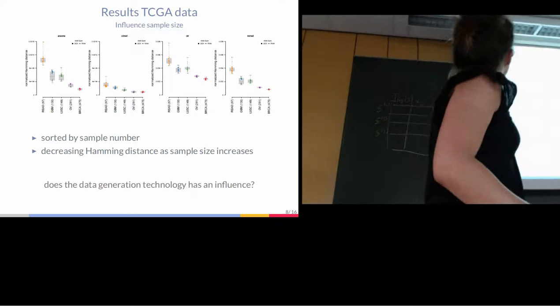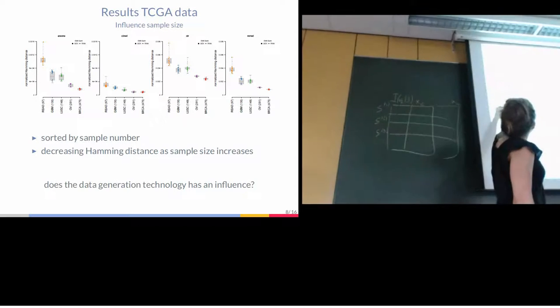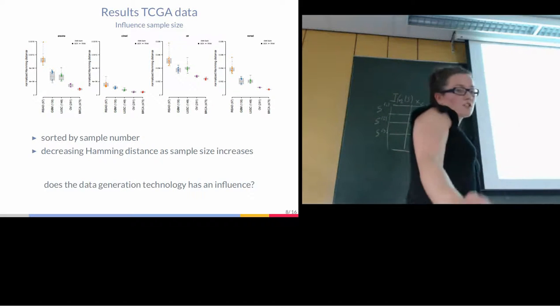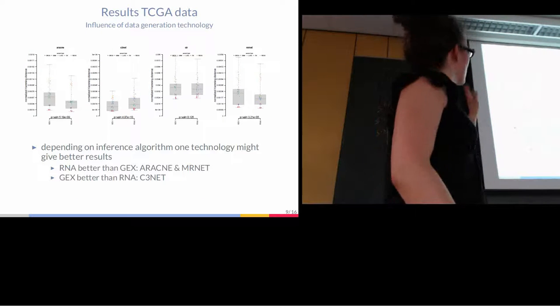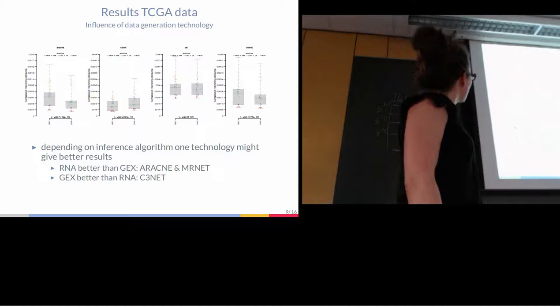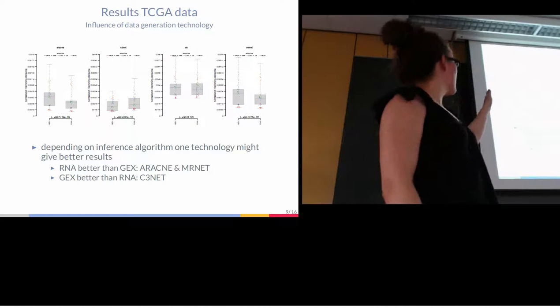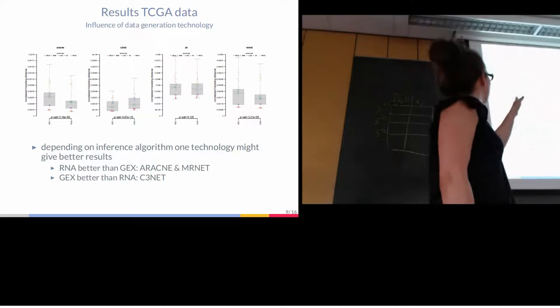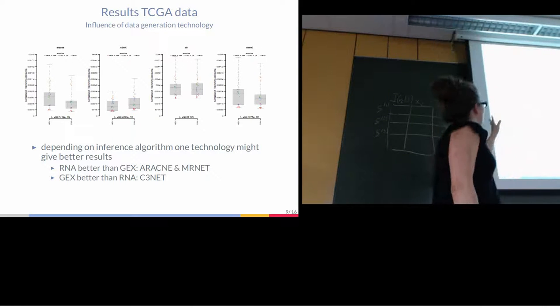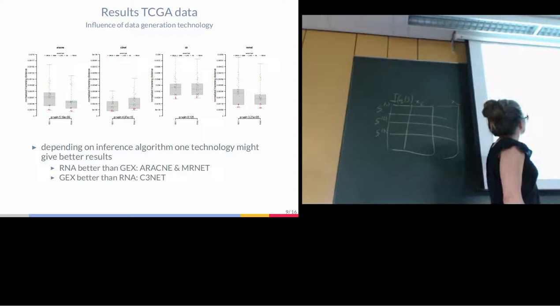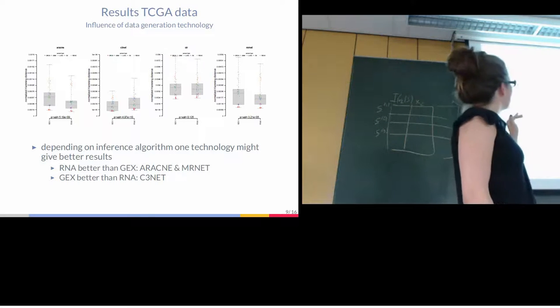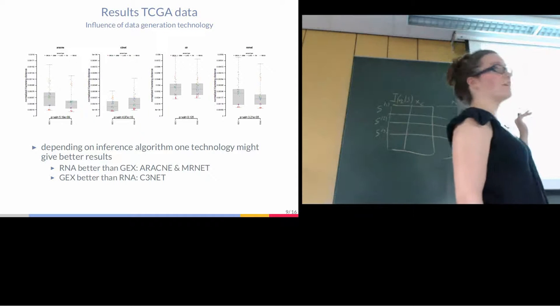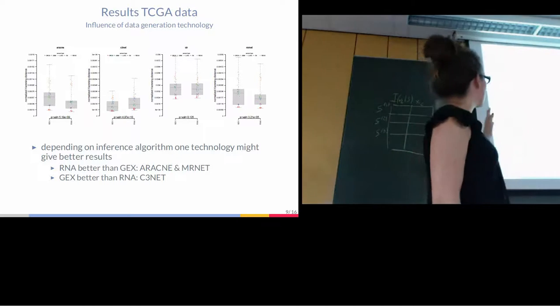In some boxes you actually can see a difference, quite good difference between two types. It's a bit difficult to see the symbols here, but it's actually due to the data generation technology. So if we look at that in more detail, again you see the four inference methods. And now you see on the left-hand side the gene expression data microarray and then on the right-hand side the RNA. And I added p-values because it's not as obvious as before if there is a difference or not. They are all paired. And we can see that for ARACNI and MRNET the RNA gives better results. For C3NET it seems to be the inverse.